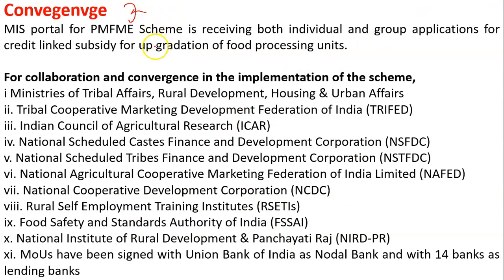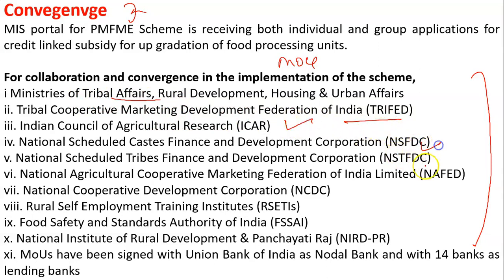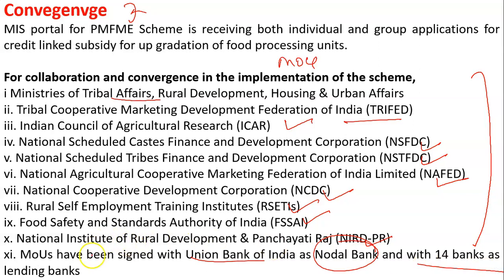This scheme has converged with all other related schemes at a single point. MOUs have been signed with the Ministry of Tribal Affairs, Trifed, ICAR, NSFDC, NSTFDC, NAFED, NCDC, RETI, FSSAI, NIRD and PI. An MOU has also been signed with Union Bank of India as a nodal bank and 14 other banks as lending banks, to provide credit to self-help groups, farmer producer organizations, and cooperatives under the scheme.